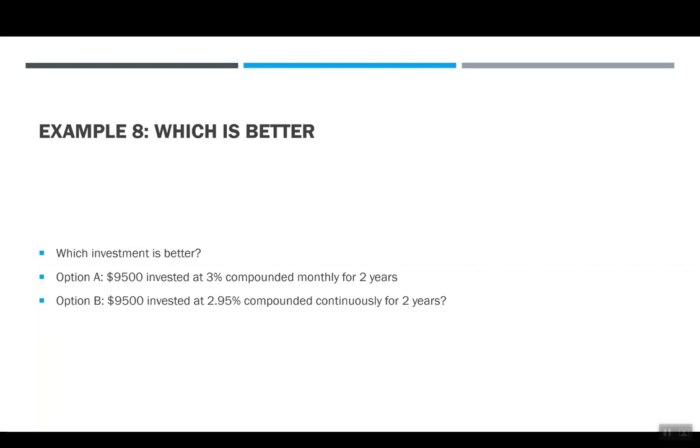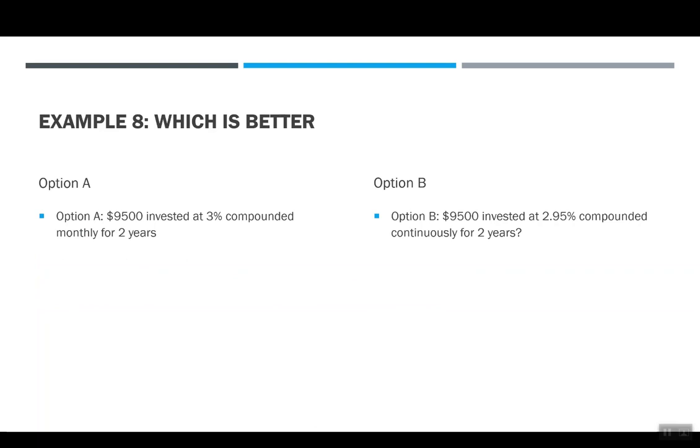Let's try this. Which one is better? Option A, $9,500 invested at 3% compounded monthly for two years, or option B, $9,500 invested at 2.95% compounded continuously for two years. So both times I have $9,500, both times I have two years, the difference here is the interest rate and how often it's compounded. Just like before, I'm going to break it into two and look at my options. This time, instead of doing effective yield, I'm just going to see how much money do I have in the future. So with option A, I have my $9,500. It's earning 3% interest compounded monthly, which is 12. So I have $9,500 times parentheses 1 plus .03 over 12. And my exponent is 12 times 2. So the monthly for two years gave me $10,086.69.